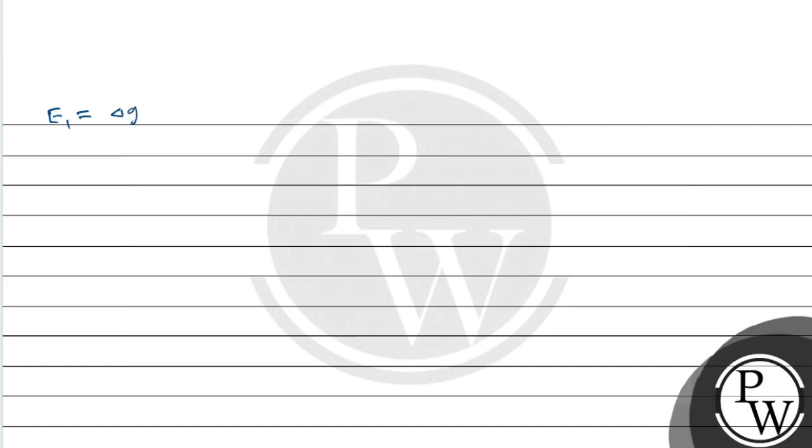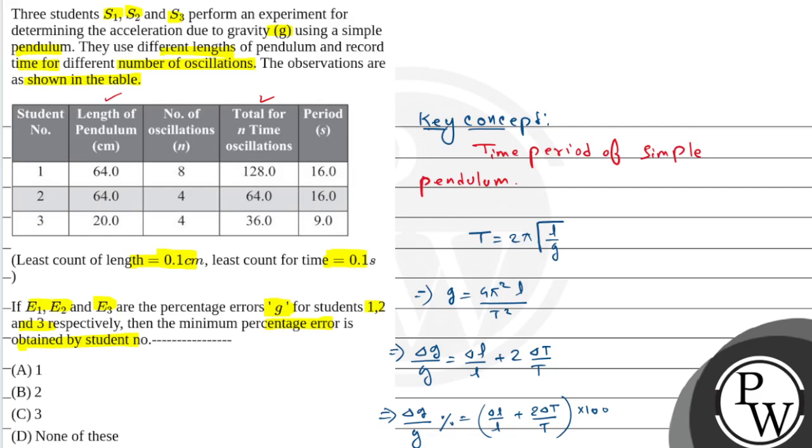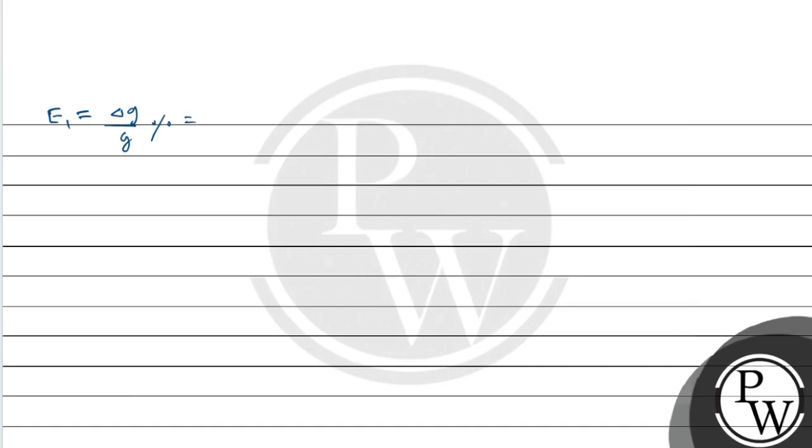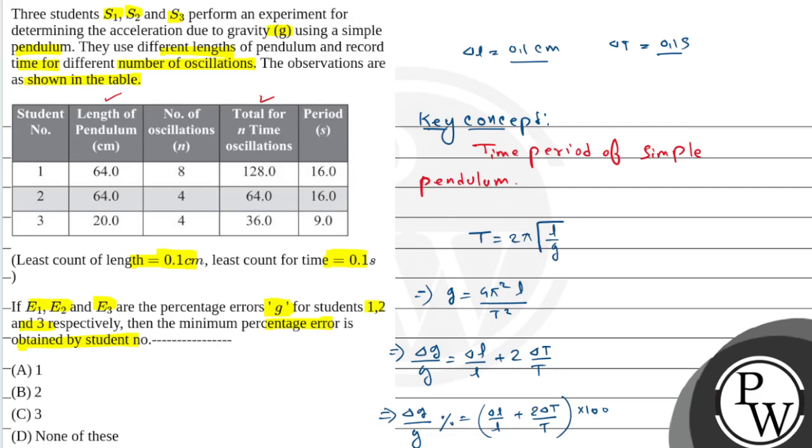Del T is given 0.1 second. Del L by L, now del L is given, least count of the length is 0.1 cm and del T is given 0.1 second. So del L by L, this equals del L that is 0.1 by L.